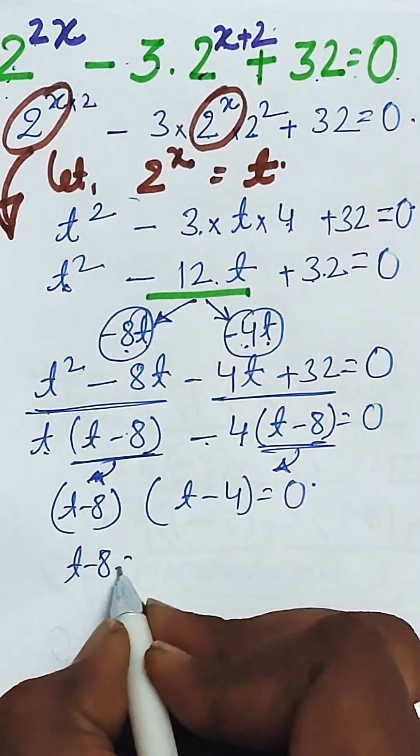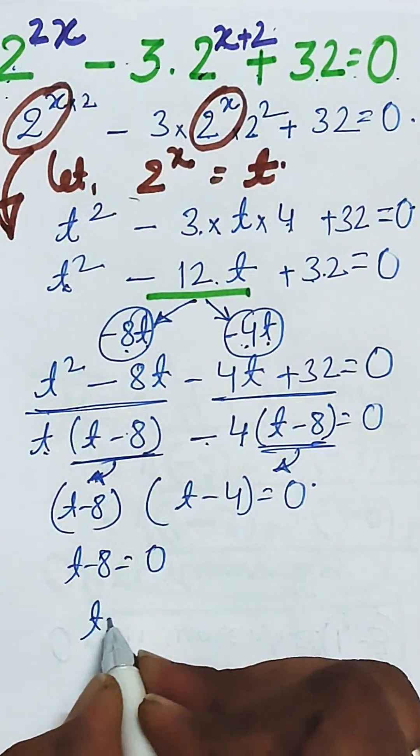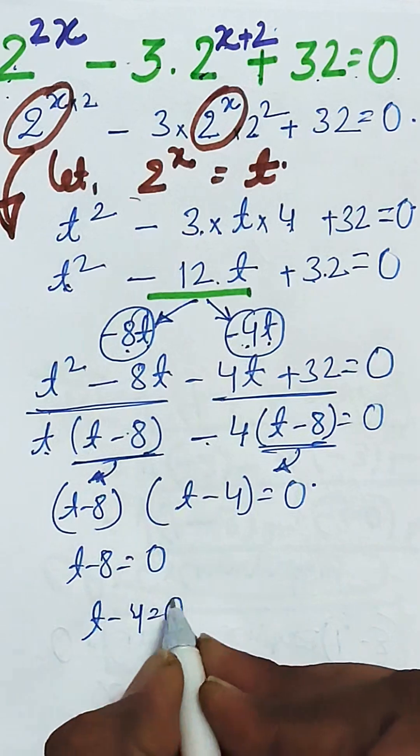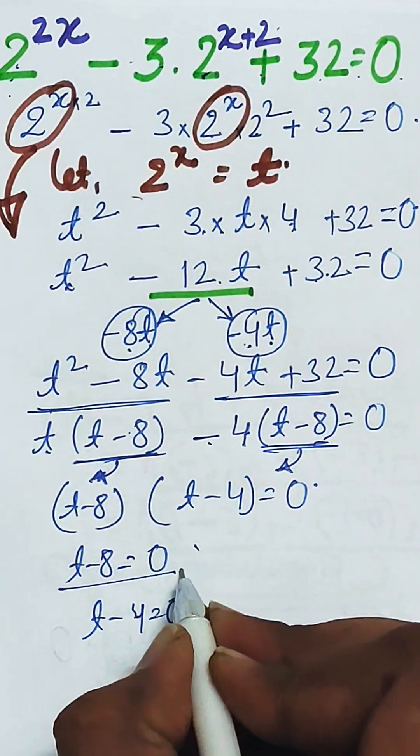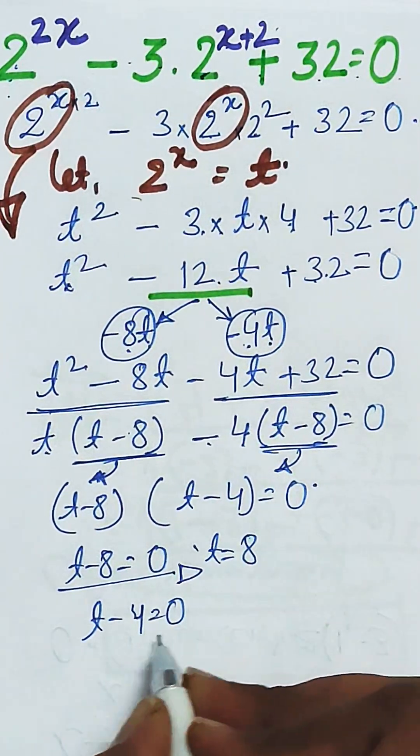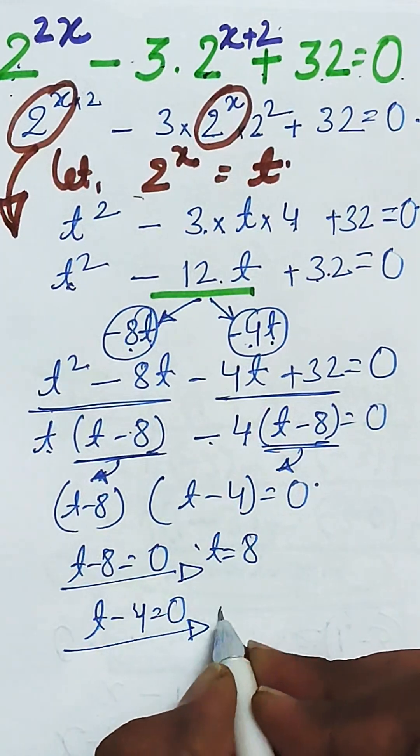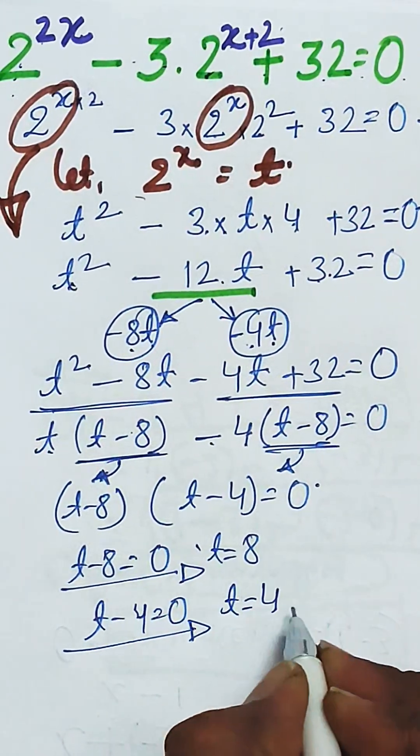So when we equate t minus 8 equal to 0 and t minus 4 as equal to 0, the first one will give you t is equal to 8 and the second one will give you t is equal to 4.